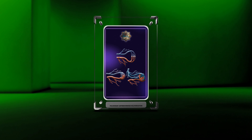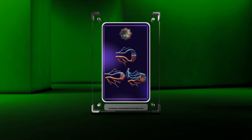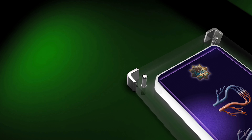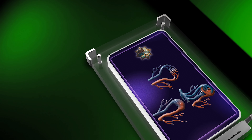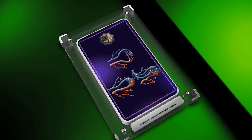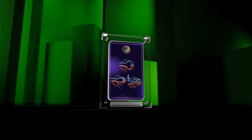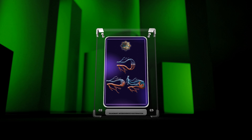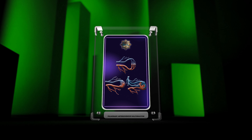Pulmonary arteriovenous malformation, PAVM, is a rare condition where abnormal connections between pulmonary arteries and veins in the lungs cause blood to bypass the capillary network.